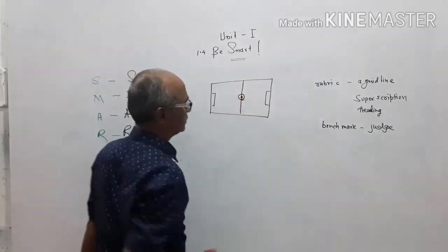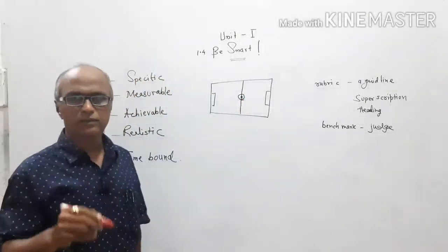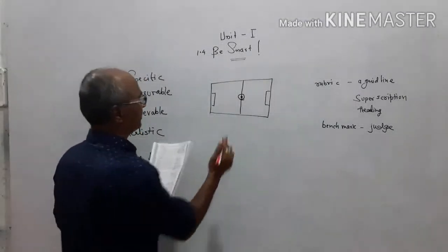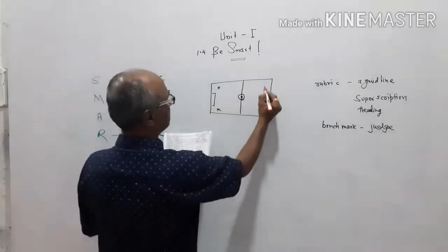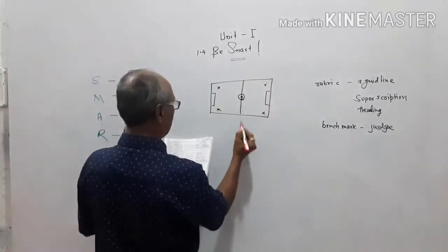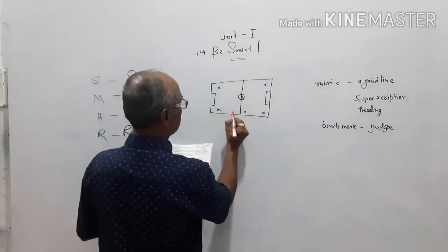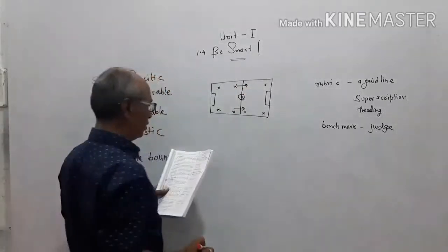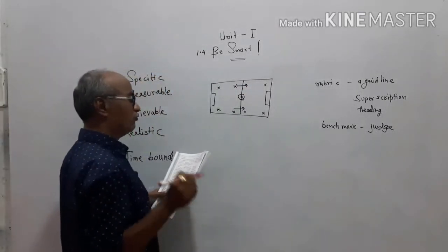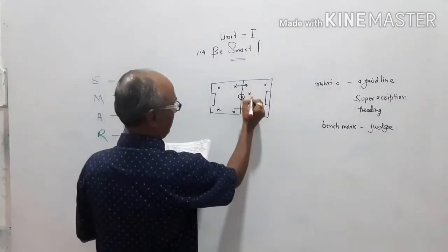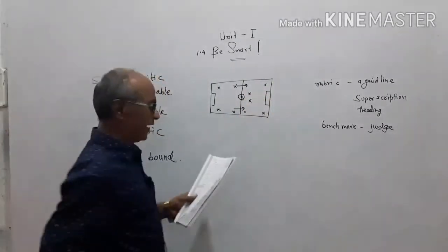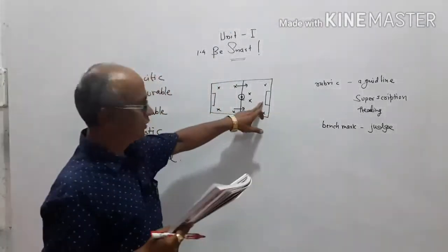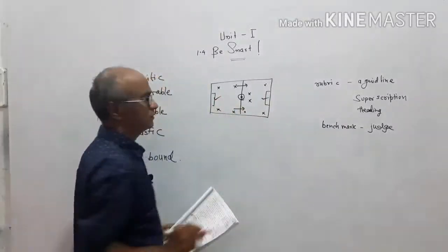Here at the center the football is kept, and when the whistle blows the game starts. Here are the players positioned in various directions. Each player goes in a particular direction — they have fixed places and play accordingly. There is also a goalkeeper with a fixed position.